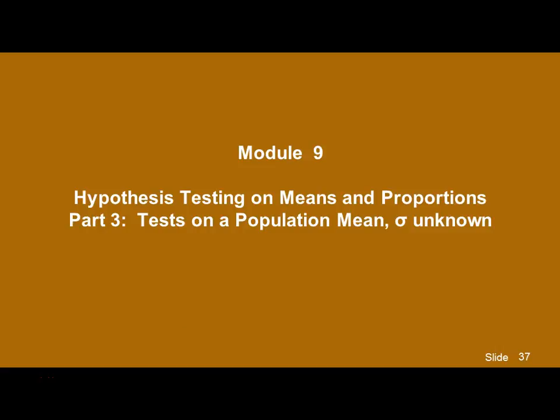Let's continue on with Module 9, hypothesis tests on means and proportions. We're still looking at tests on a mean, but now we're going to take up the sigma unknown case.